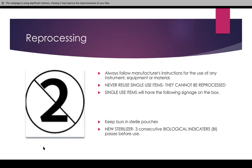We are never to use single-use items more than once — single-use items cannot be reprocessed under any circumstance. How do we know if it's a single-use item? If it's a burr, a syringe, or anything we're not sure about, we check the box or packaging — it will have a specific symbol on it, meaning you cannot use it twice.